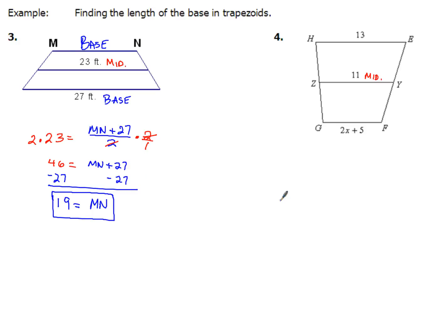Now, similarly, I'll do the same kind of thing over for example number 4. In this one, our mid-segment ZY has a value of 11. So I'm going to write down 11 equals, now my two bases, one of them has a value of 13, and the other one has 2x plus 5. That's for GF. All of that divided by 2.